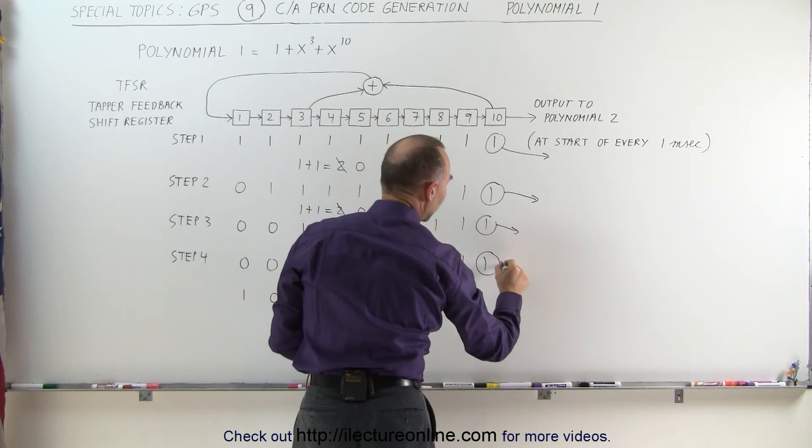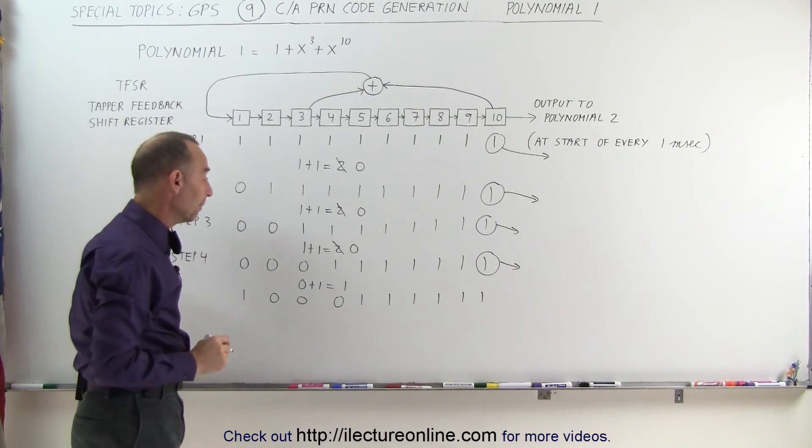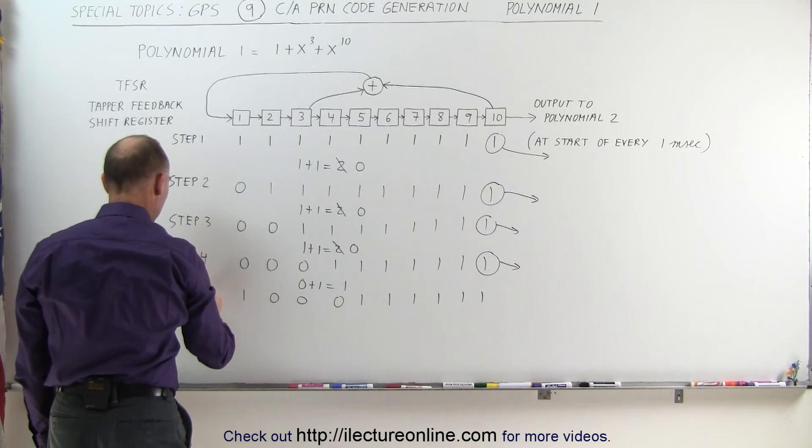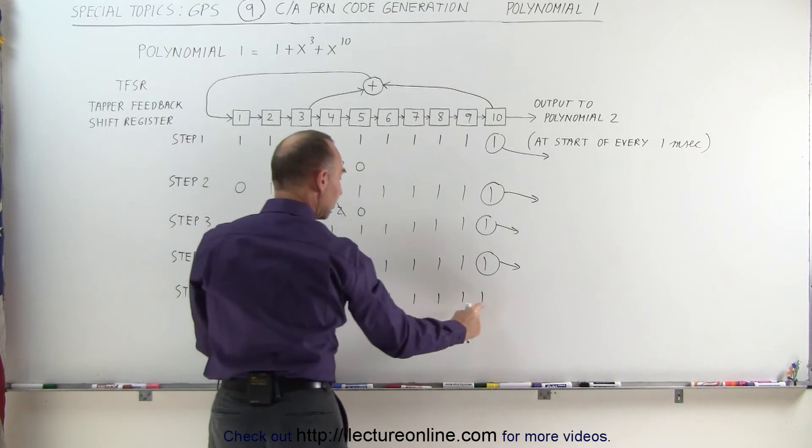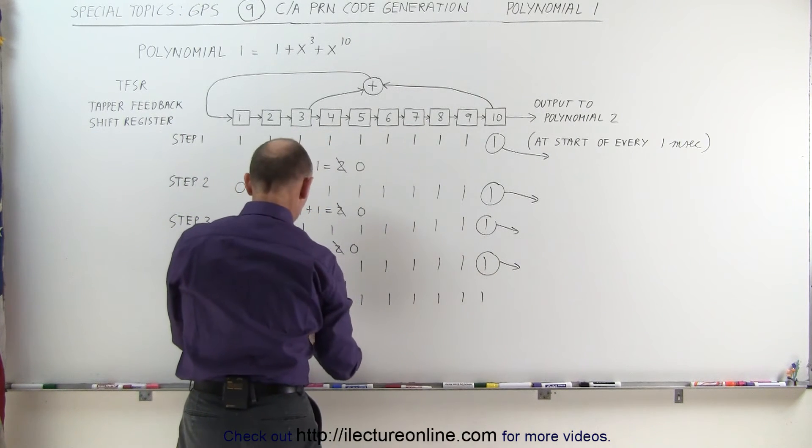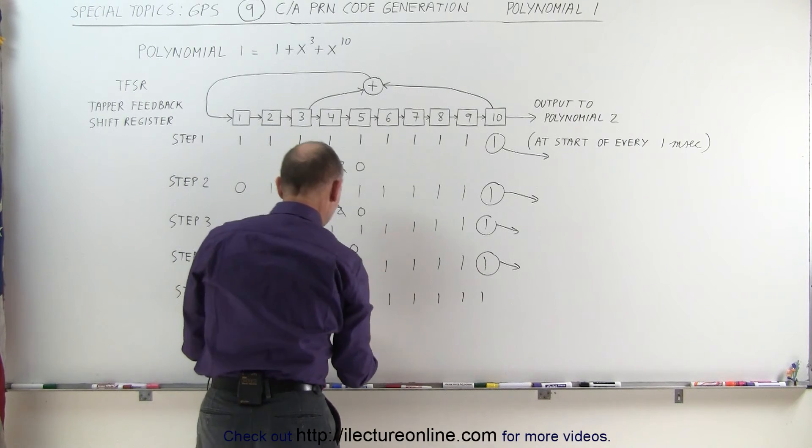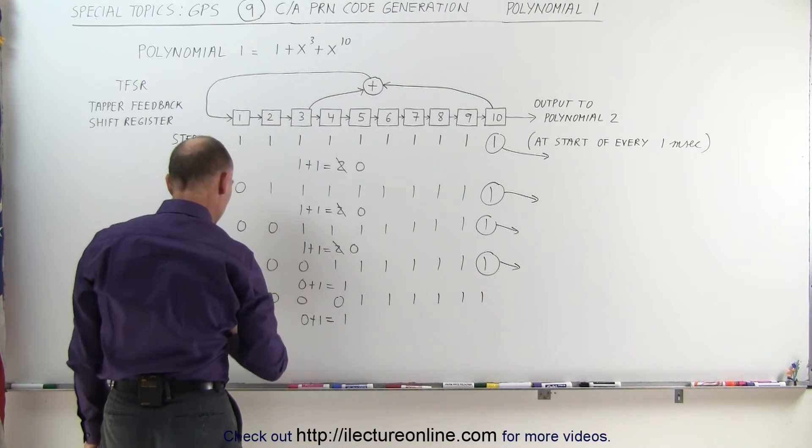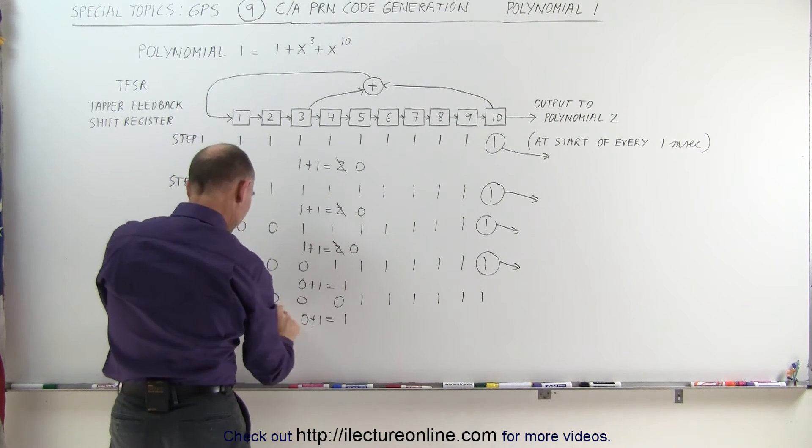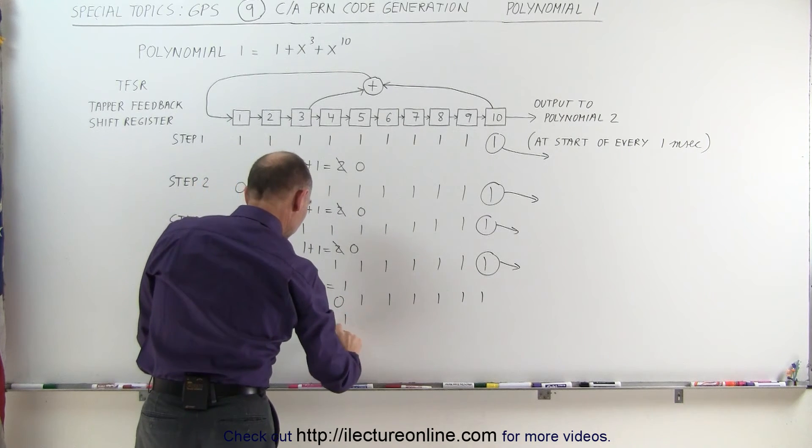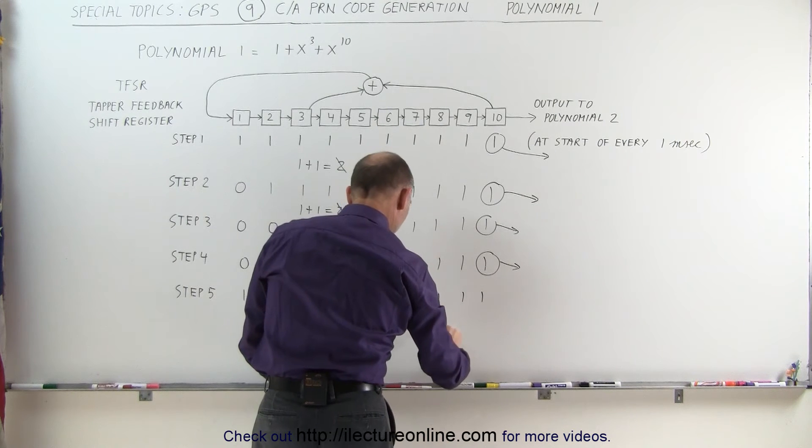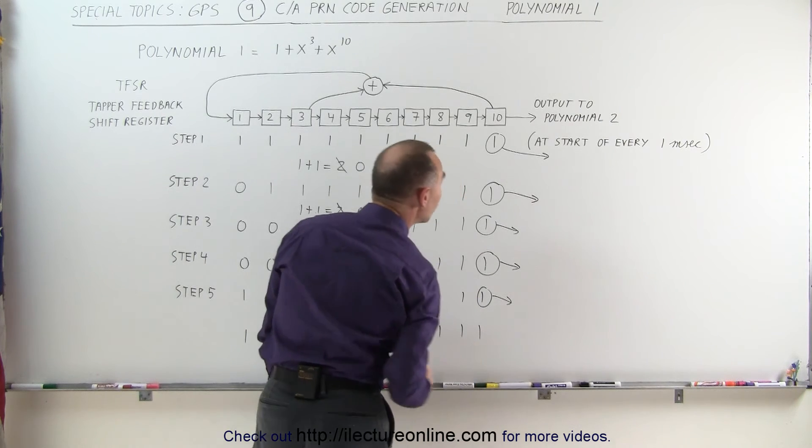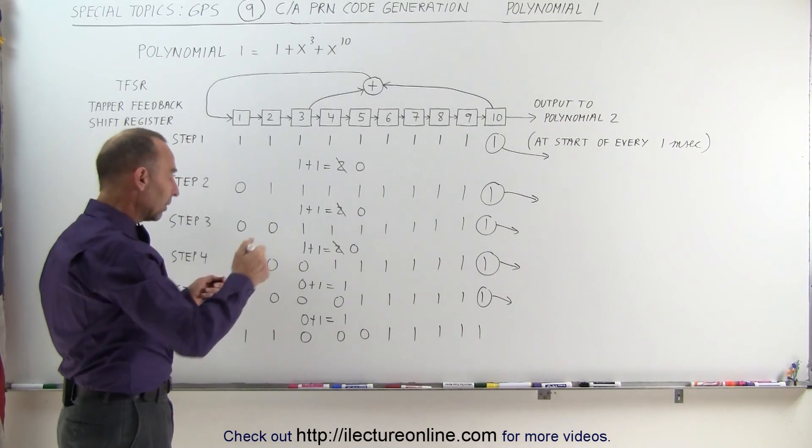And at the same time, the contents of 10 went over to polynomial 2 to get summed up. Let's do it one more time. So we have the content of 3. The content of 3 and the content of 10, that would be 0 plus 1, which is equal to a 1. That gets fed through and is put into register 1. Everything else shifts over. This 1 goes over here. The 3 zeros, 1, 2, 3. And then all the ones get shifted over by 1. And the 1 that was in the 10th location here goes into the polynomial 2 process.